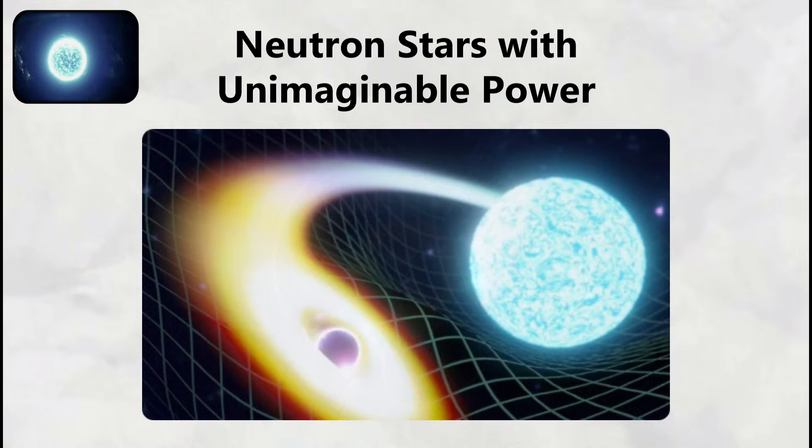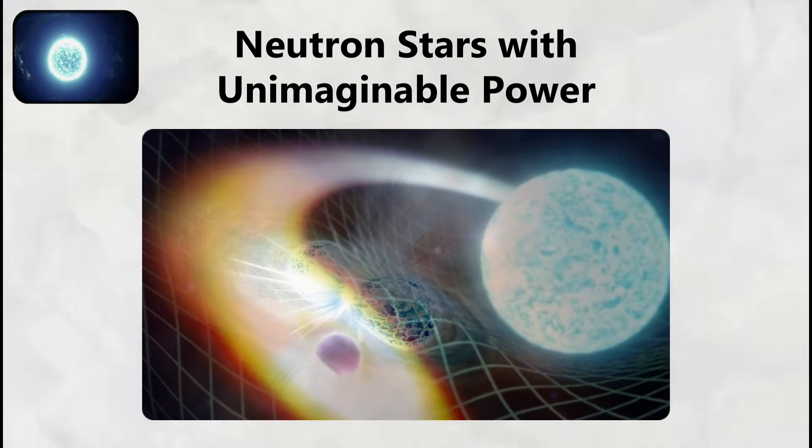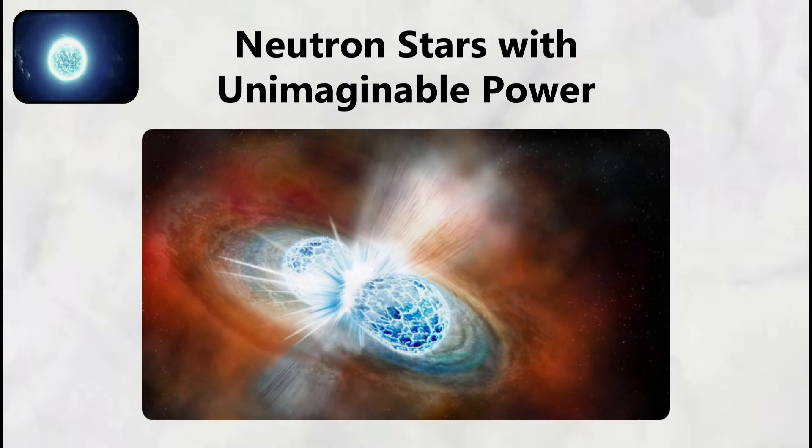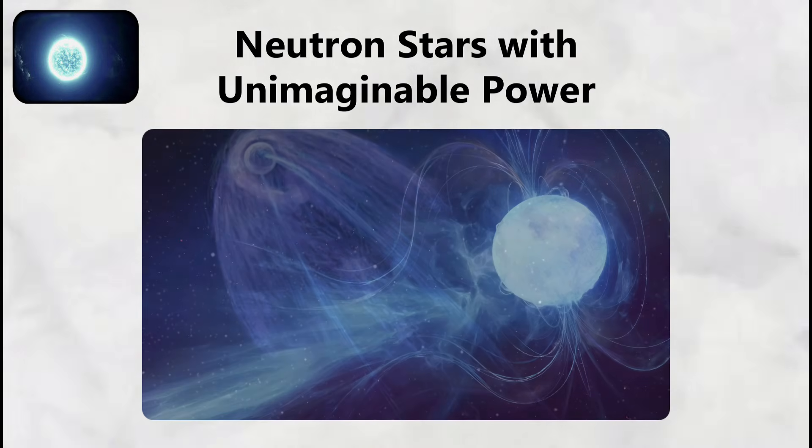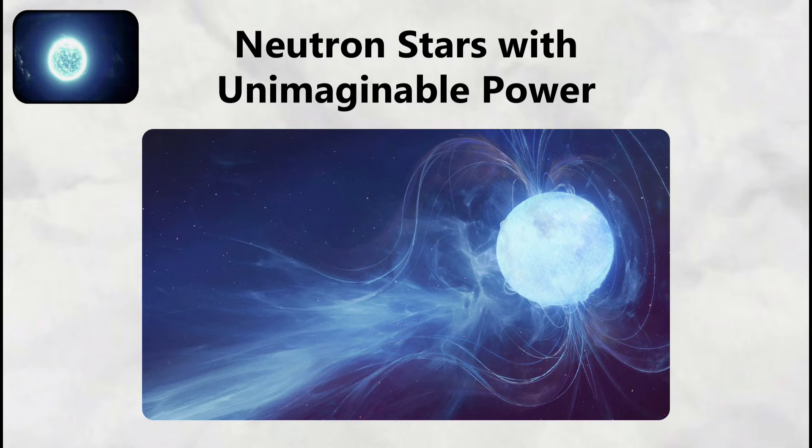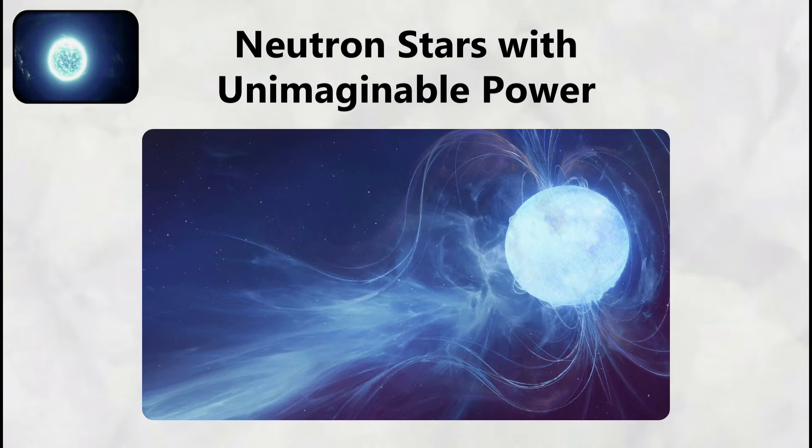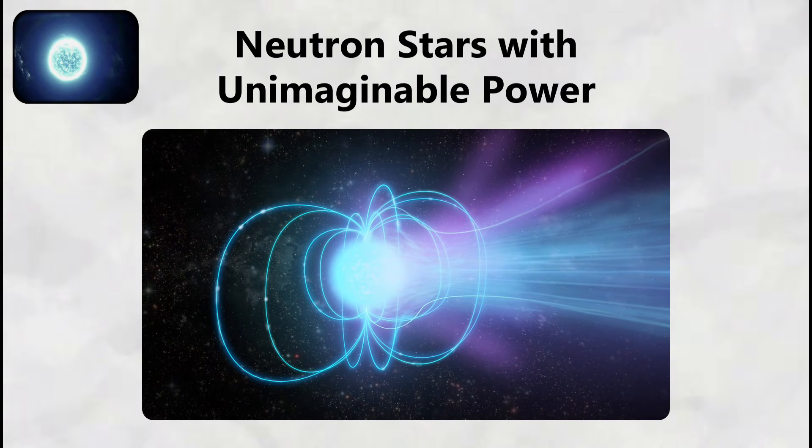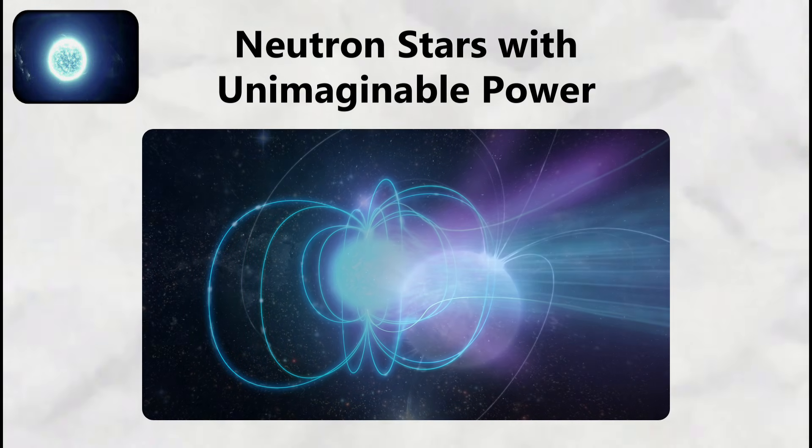What distinguishes magnetars from ordinary neutron stars is their magnetic field strength, which reaches one quadrillion times more powerful than Earth's magnetic field and 1,000 times stronger than typical neutron stars. The magnetic field of a magnetar is so intense that it could erase every credit card on Earth from a distance of 100,000 kilometers and would be lethal to human life from 1,000 kilometers away by disrupting the electrical activity in nerve cells.